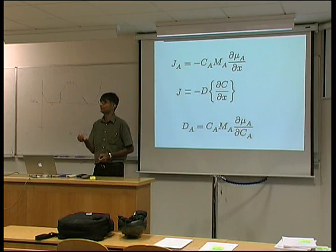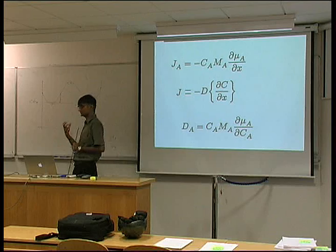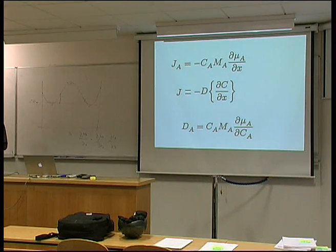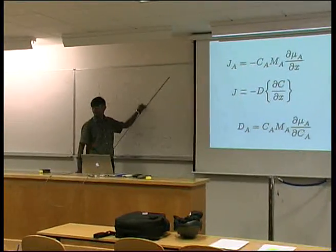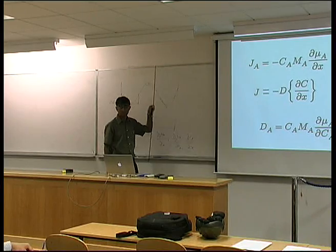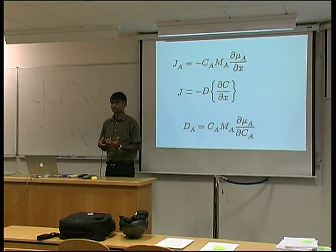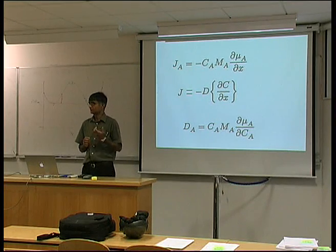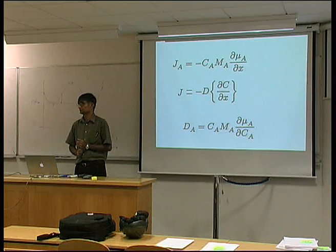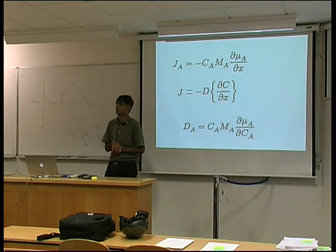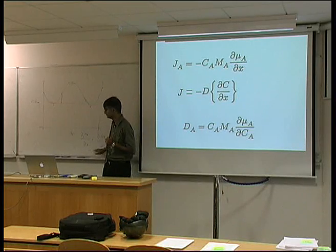This is where much of the composition dependence of the diffusion coefficient comes from. If you know your thermodynamics, you can determine the composition dependence of D. The diffusion coefficient is not really a constant - it will depend on the chemical composition of your material, because mu varies as a function of composition. Although Fick's law is not exactly correct, we like to use it because a huge amount of theory has been developed in terms of diffusion coefficients, and all we do is substitute this composition-dependent D.